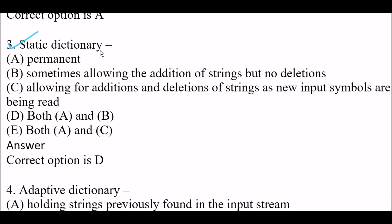Next question about the static dictionary: Option A: Permanent. Option B: Sometimes allowing the addition of strings but no deletions. Option C: Allowing for additions and deletions of strings as new input symbols are being read. Option D: Both A and B. Option E: Both A and C. The right answer is Option D — both A and B. A static dictionary is permanent and sometimes allows the addition of strings but no deletions.